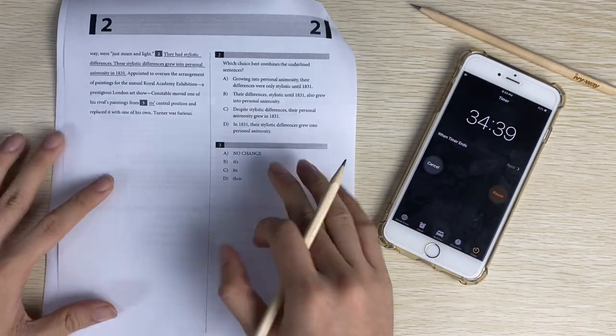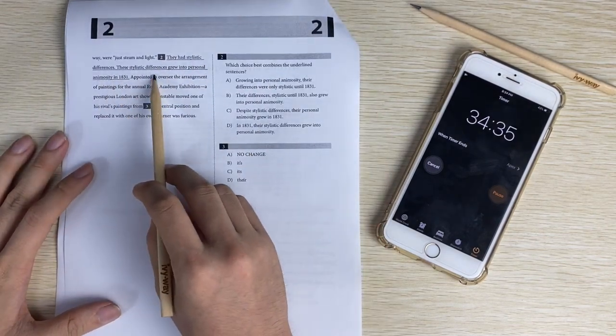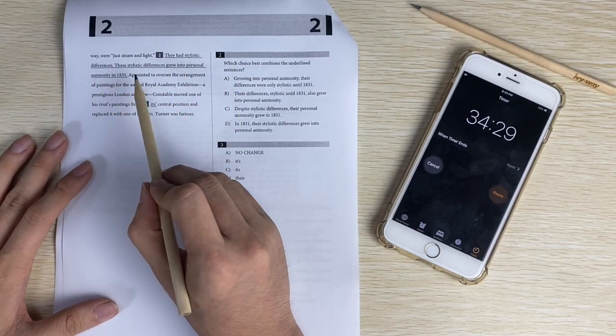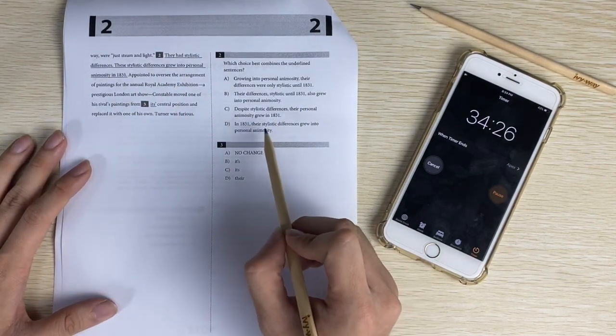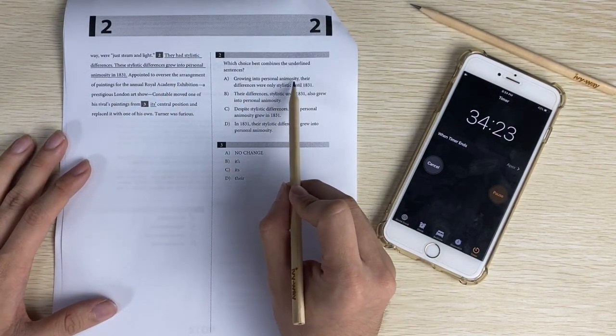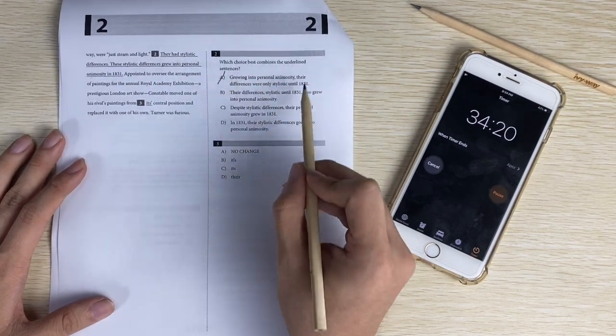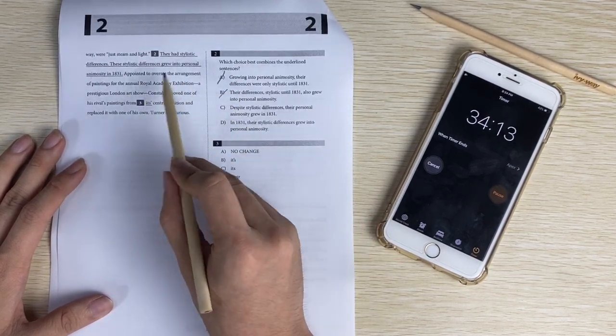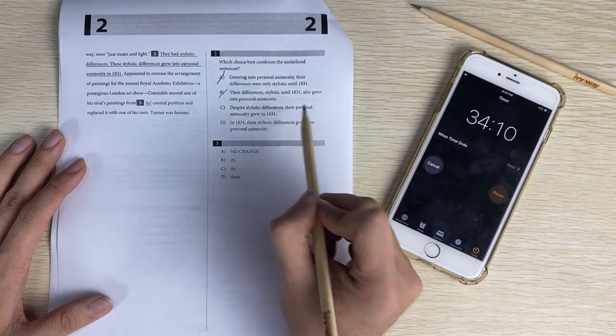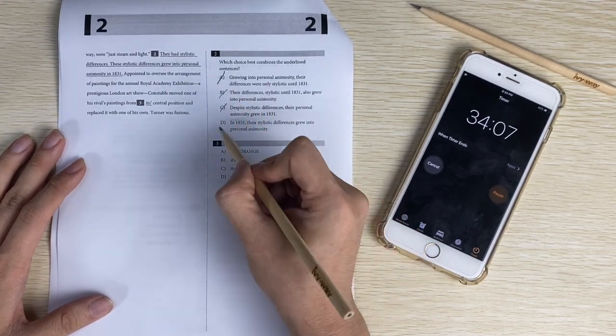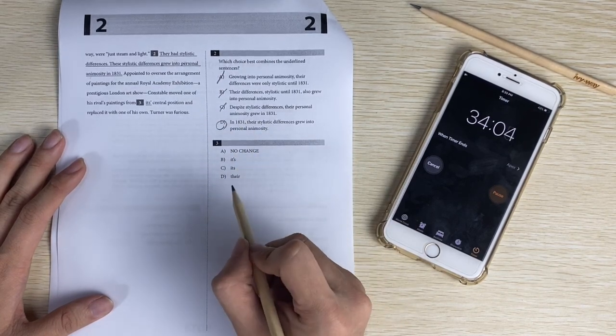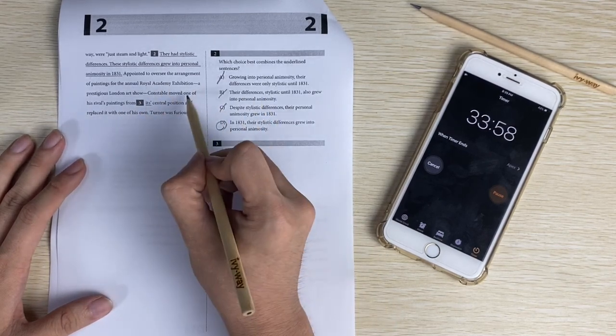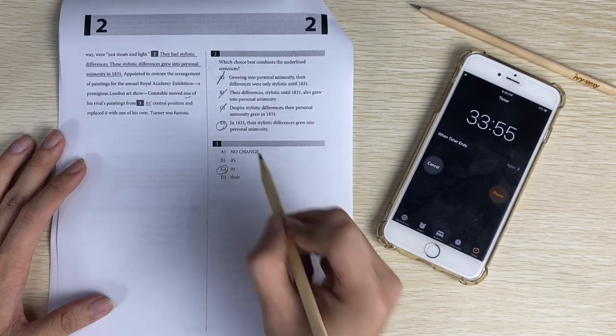Now, this combines the underlying sentences. They have dialectic differences. These dialectic differences grew into personal animosity. So it should be about dialectic differences. Their differences also grew into animosity - that changes the meaning. Despite their differences also changes the meaning and logic. So the answer is D. Number three, it's about singular or plural. Constable moved one of his verbal paintings from its central location. It's from one, so it should be its central location, not it's.